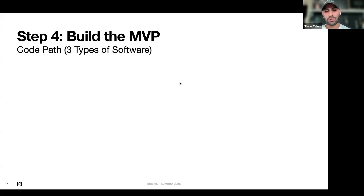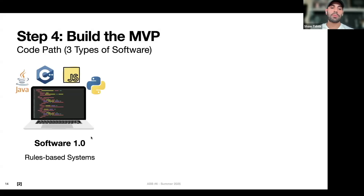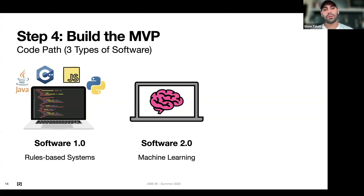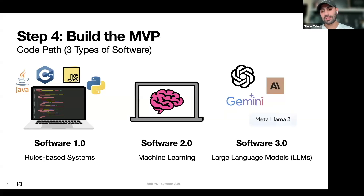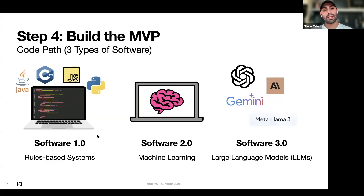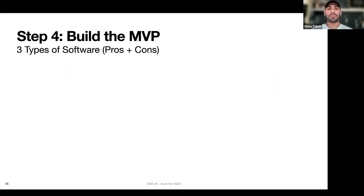For the coding path, consider what kind of software you're going to use to build out different parts of your MVP. There are three types of software — language popularized by Andrej Karpathy. Software 1.0 is what AI was for its first 50 years: rule-based systems, traditional software. Then came software 2.0 — machine learning — where instead of explicitly writing instructions in code, you can program computers by example: give it a lot of examples of a task and the computer learns how to do it. Now we have software 3.0 — large language models — where you don't even have to give examples; you just write clever prompts, give it helpful context, and it can do very complicated tasks. There might be a bias today to solve all your problems with LLMs, but it's important to try to solve it with code if you can, because it's more predictable.